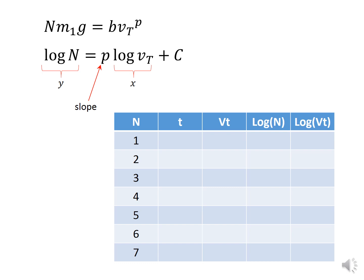So you will graph, do a graph of log n versus log of V terminal, include a linear trend line, get the slope, and that would be then the power P in our model.